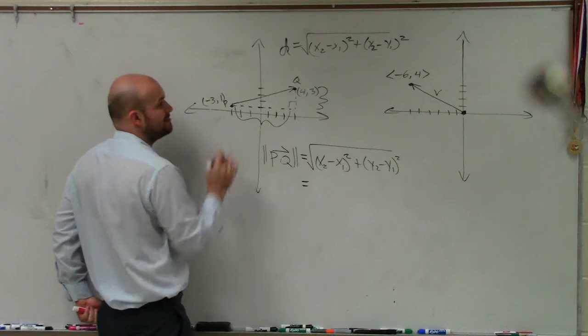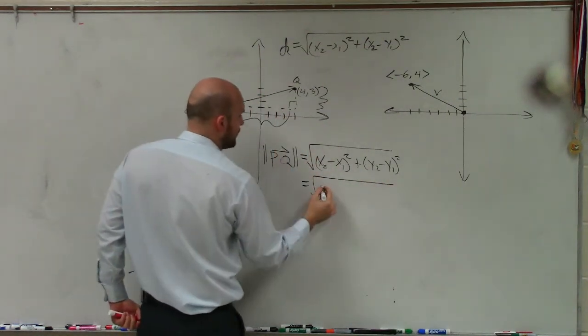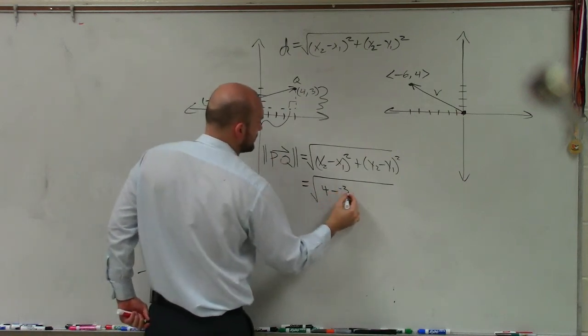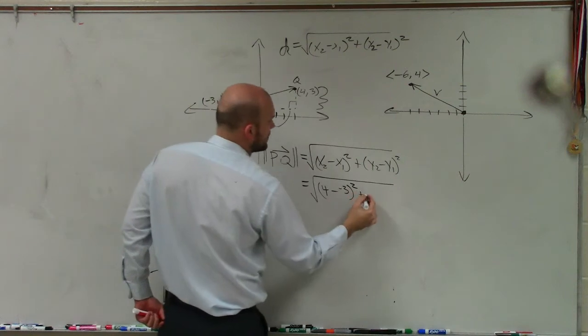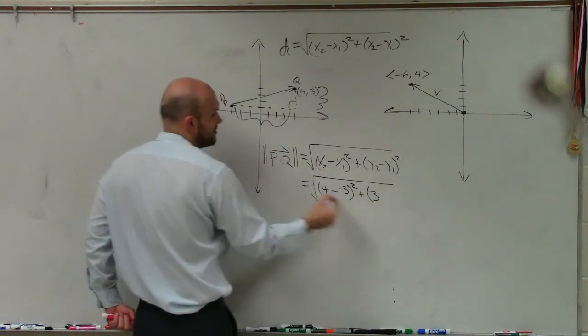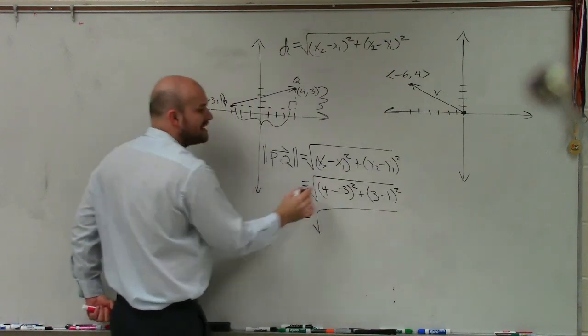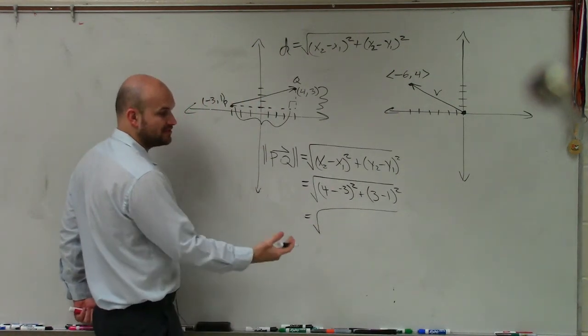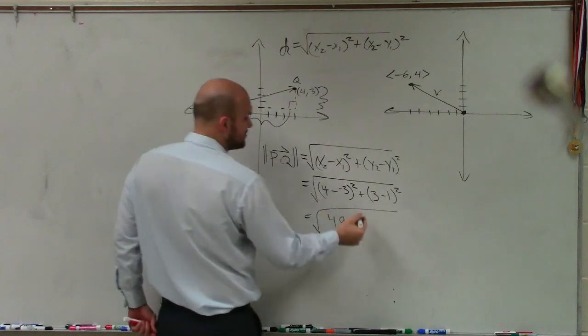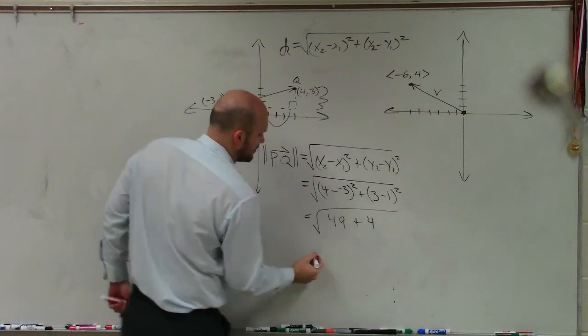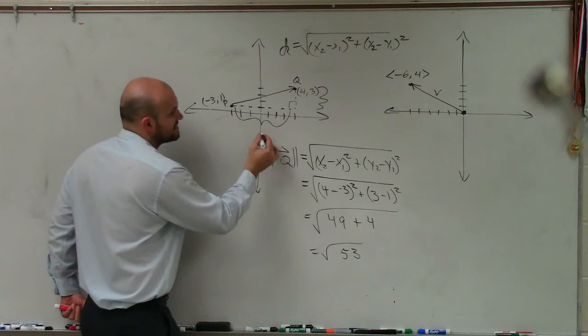So in this case, if I wanted to find the magnitude of this vector, I take the square root. x2 is 4 minus negative 3 squared, and then here I have 3 minus 1 squared. So to help you out to solve this problem here, 4 minus the negative 3 is going to be 4 plus 3, which is 7. 7 squared is 49. 3 minus 1 is 2. 2 squared is going to be 4. Add those up, and I get the square root of 53.